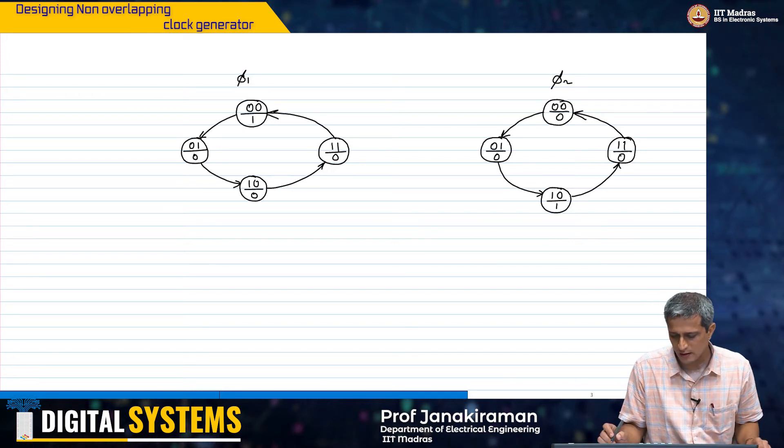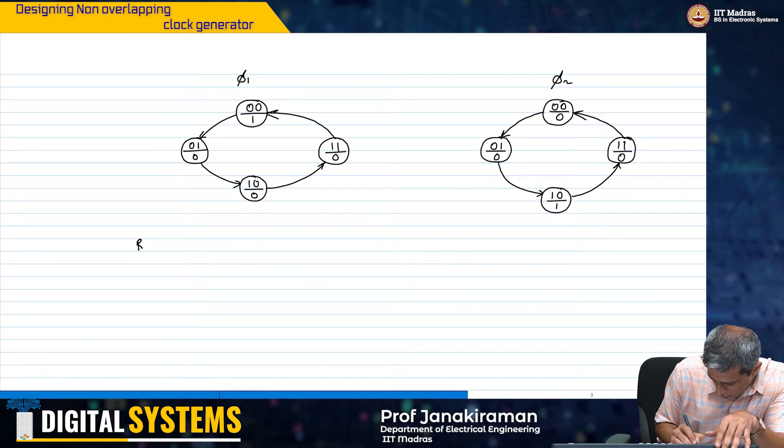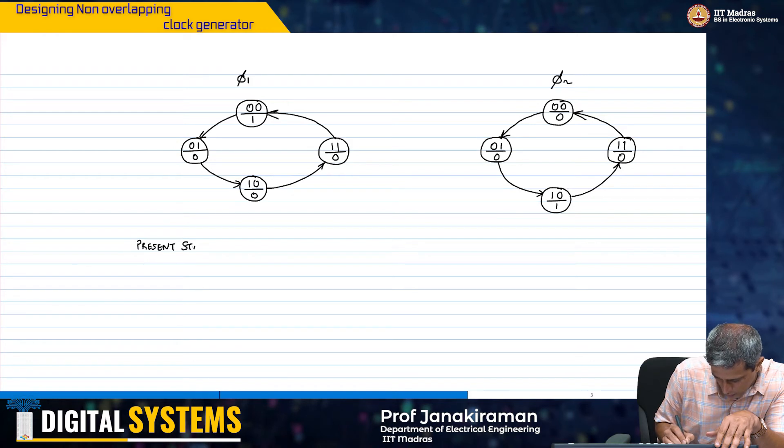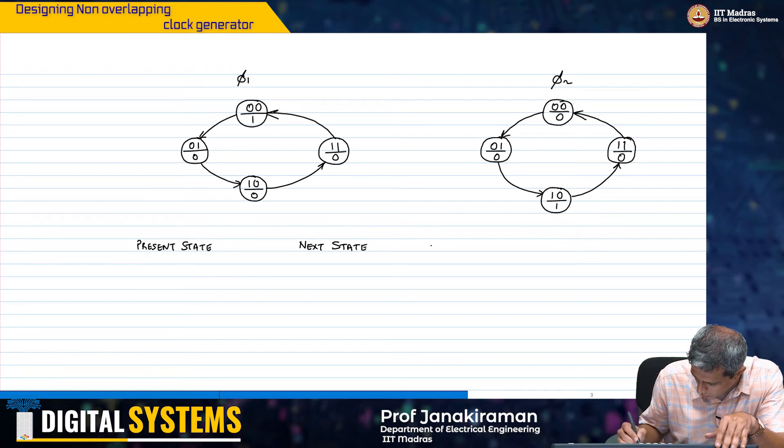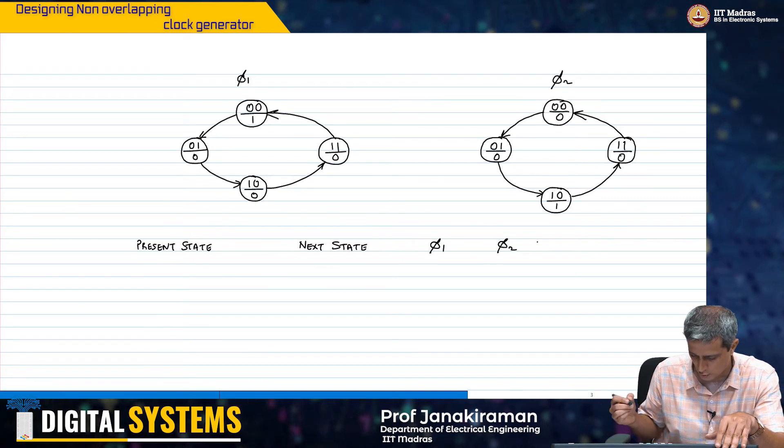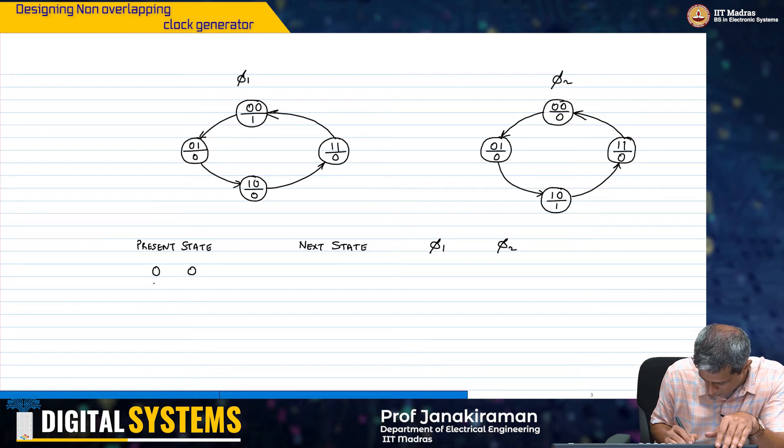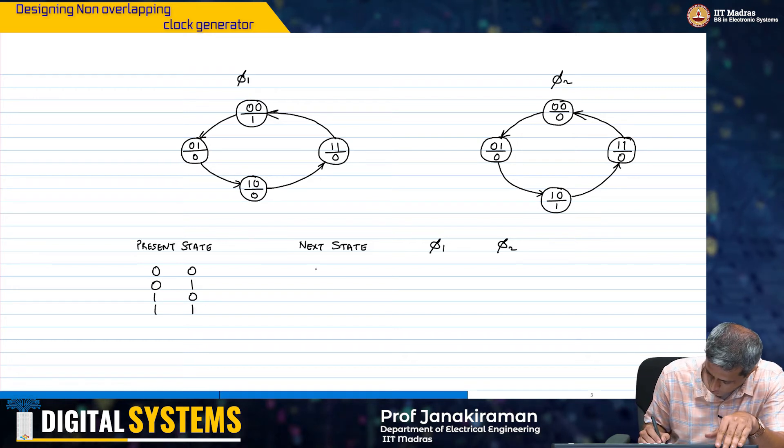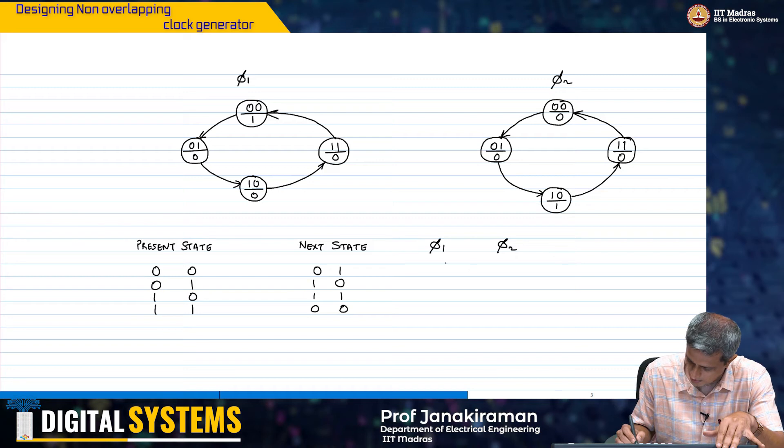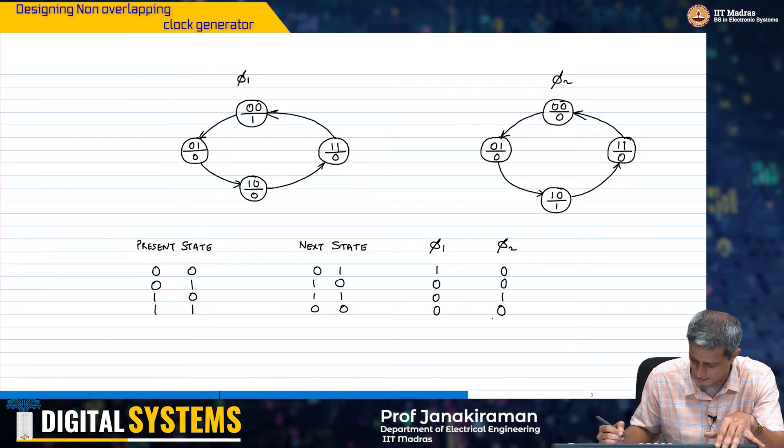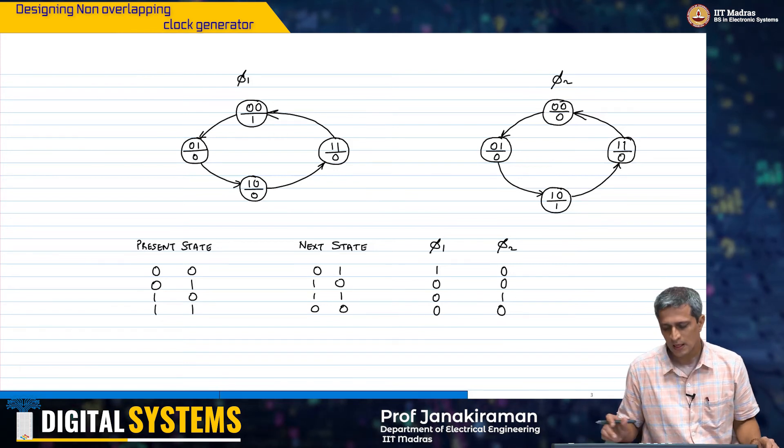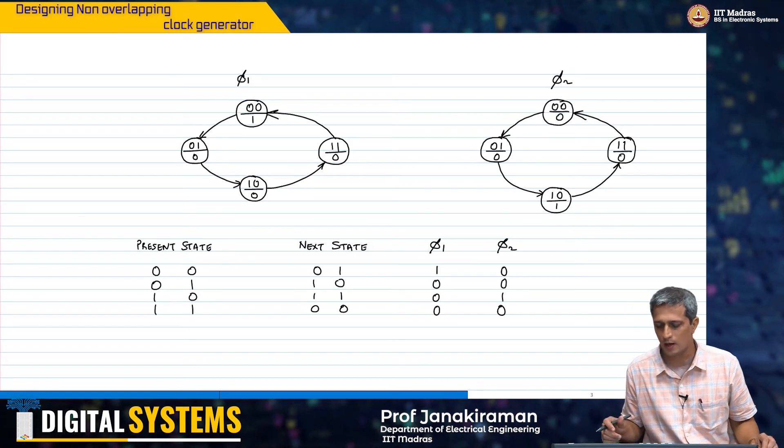It is very evident that if we just go ahead and look at the present state and next state, and then phi 1 and phi 2. You have 0 0, 0 1, 1 0, 1 1, 0 0. Next state is going to be 0 1, 1 0, 1 1, 0 0. And then you have phi 1 and phi 2 where you want this to be 1 0 0 0, 0 0 1 and 0. This is exactly what we have here.